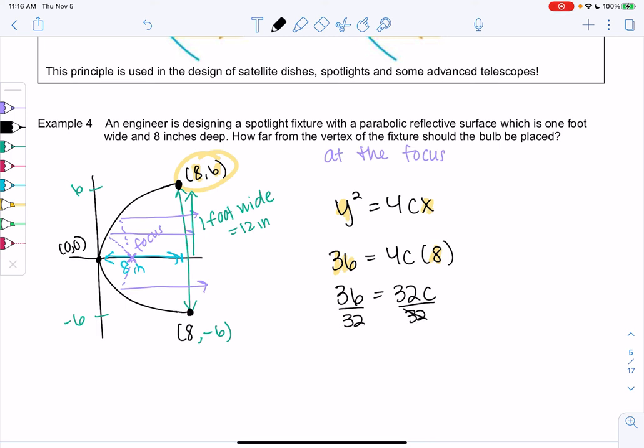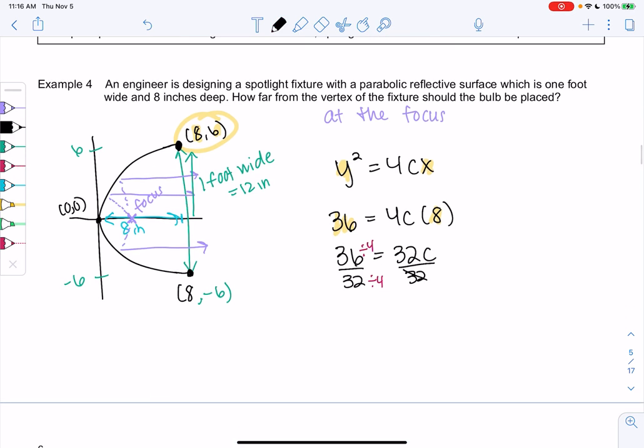So 36 over 32. Let's see. They're both divisible by 4. So we get 36, what is that? 12 over 8.